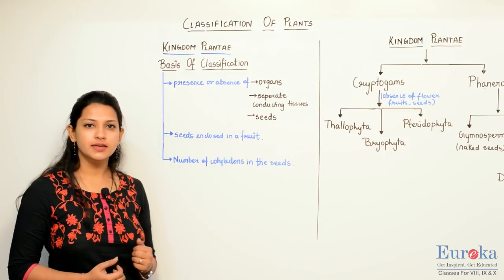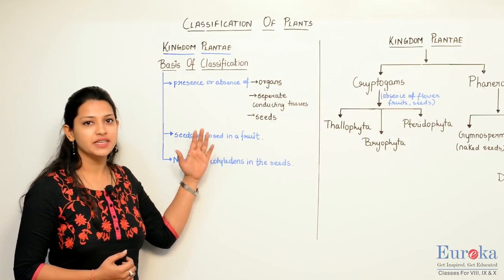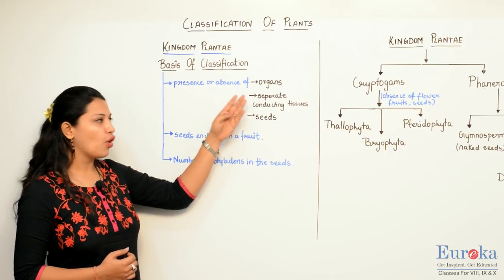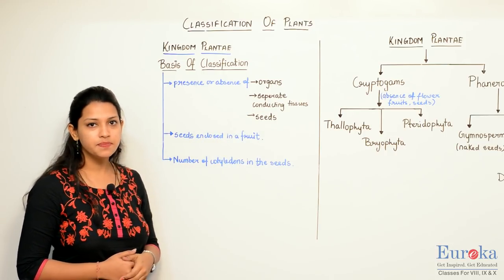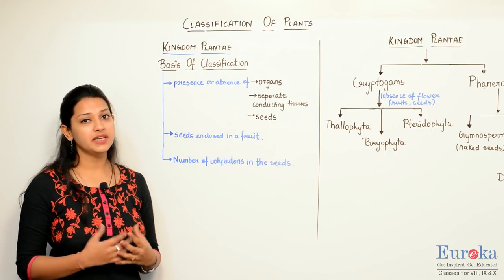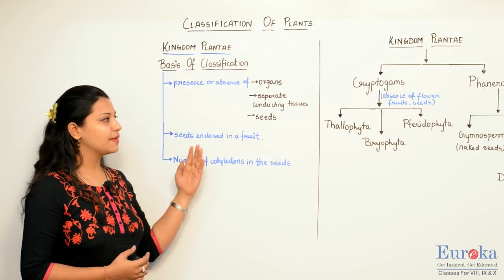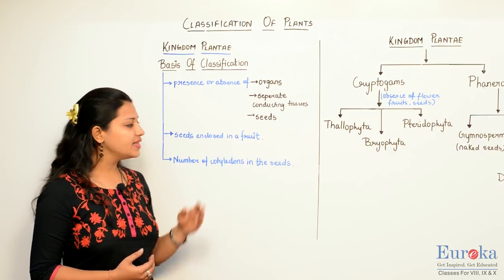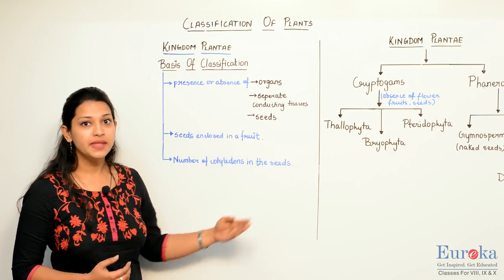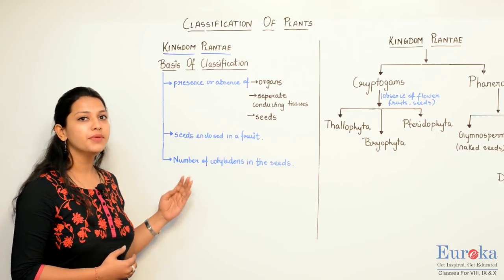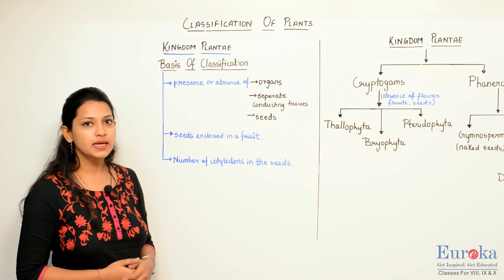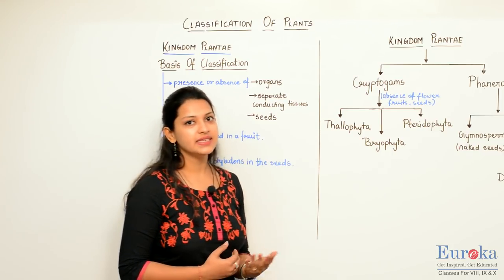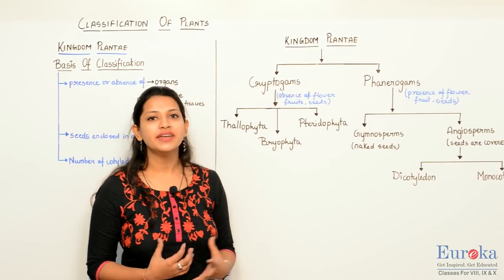What points are considered while classifying kingdom Plantae? Whether the absence or presence of particular organs in the plants; the absence or presence of separate conducting tissues; the absence and presence of seeds; if seeds are present, are they enclosed in a fruit or not; and the number of cotyledons in the seeds. Taking all these points into consideration, we classify kingdom Plantae into broadly two categories.